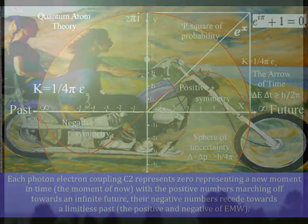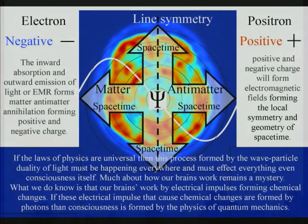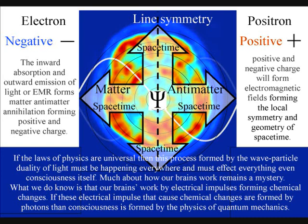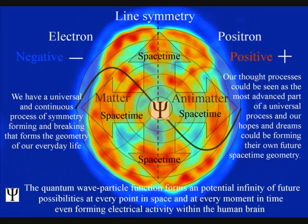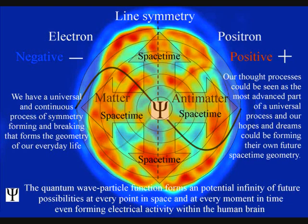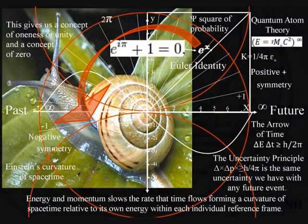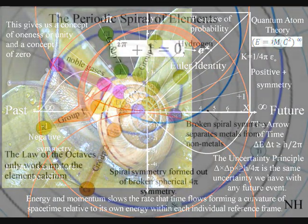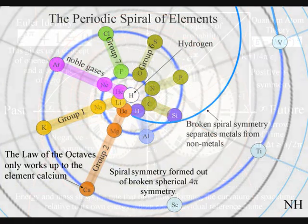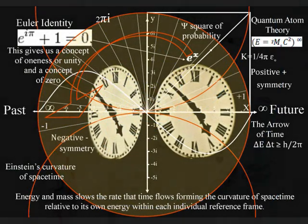The probability function that forms the uncertainty principle also forms the movement of electric charge, forming the flow of electric current with electrical potential. In this theory, electrical potential and the individual's future potential are the same within their own reference frame. The most advanced part of this universal process is in the form of electrical activity in the brain, being able to comprehend and measure this process as the flow of time with a past and uncertain future. This process is totally universal and interactive — from the largest object to the smallest element of the periodic table — and will slow the rate that time flows, forming a curvature of space-time relative to its own energy or mass.